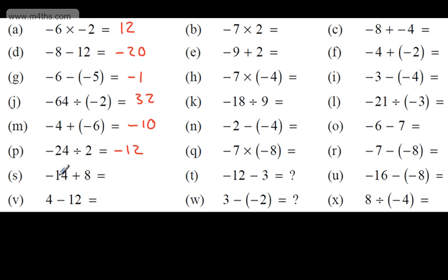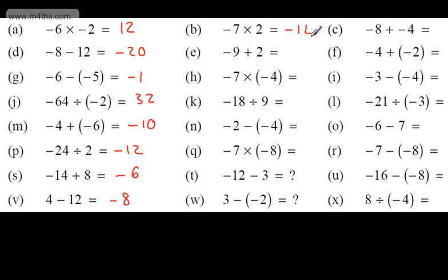Starting at negative 14 and adding 8 — adding a positive increases the value — gives negative 6. Think of it this way: you owe the bank manager 14 pounds, you put 8 pounds in, you only owe him 6 pounds. 4 subtract 12: positive number, taking another away, gives negative 8. 7 times 2 is 14; one positive, one negative, so negative 14. Negative 9 plus 2 — adding a positive increases the value — gives negative 7.